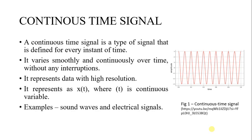Next, continuous time signal. A continuous time signal is a type of signal that is defined for every instant of time. It varies smoothly and continuously over time without any interruption. It represents data with higher resolution. It is represented as x(t) where t is a continuous time variable. Examples of continuous time signals are sound waves and electrical signals.